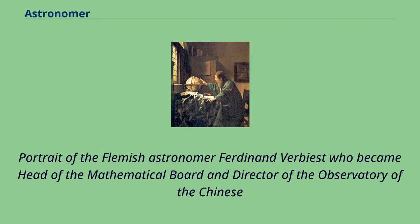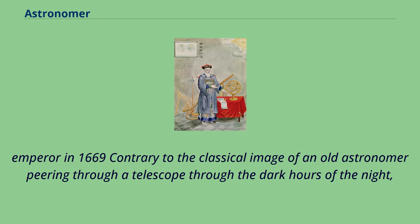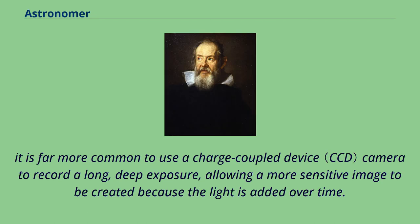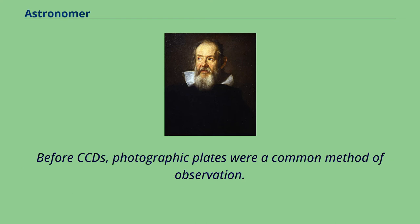Contrary to the classical image of an old astronomer peering through a telescope through the dark hours of the night, it is far more common to use a charge-coupled device camera to record a long, deep exposure, allowing a more sensitive image to be created because the light is added over time. Before CCDs, photographic plates were a common method of observation.